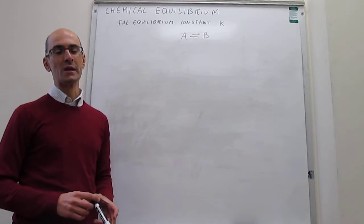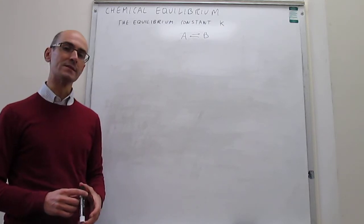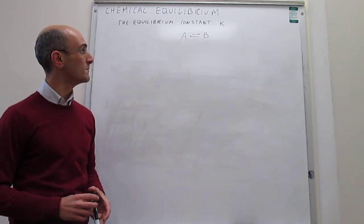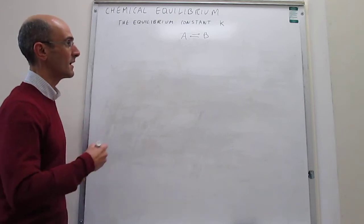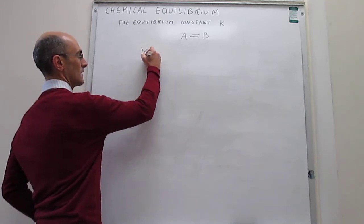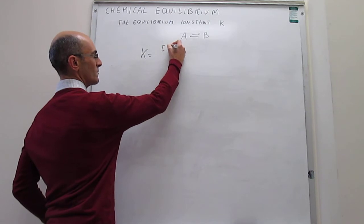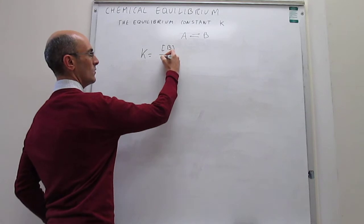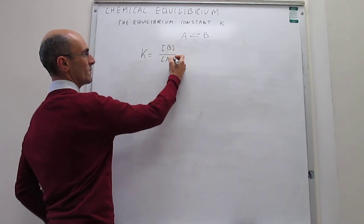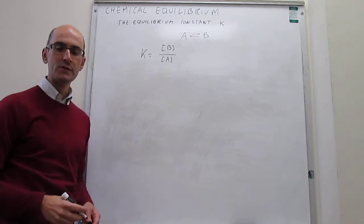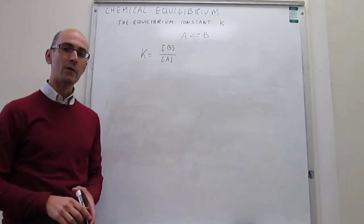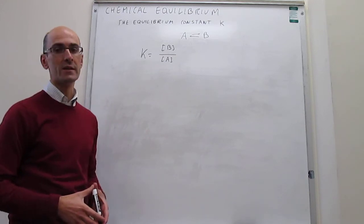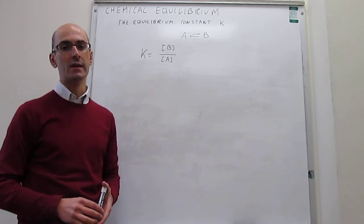In a prior video, we introduced the concept of the equilibrium constant. For a reversible reaction A giving products B, we said that the equilibrium constant K is simply the concentration of products to the power of the stoichiometric coefficient, over the concentration of reagents to the power of the stoichiometric coefficient, which is 1. This is a simplification, and it only works if you have reagents and products as solutes in an aqueous solution.